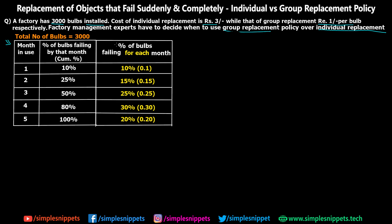The first thing we have to find out is the percentage of bulbs failing for each individual month. What has been given is the percentage of bulbs failing by that month — which means all values are cumulative. After one month 10% are failing, after two months 25% are failing, which means 10% is included in that. So to calculate the percentage failing for one particular month, we subtract the previous month's value. For the second month: 25 − 10 = 15%. For the third month: 50 − 25 = 25%. These values represent the percentage of bulbs failing individually in that particular month.